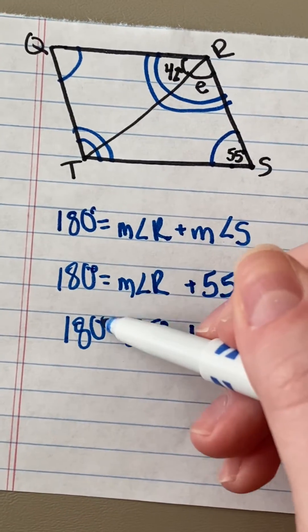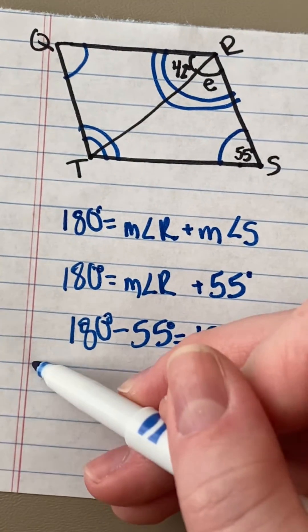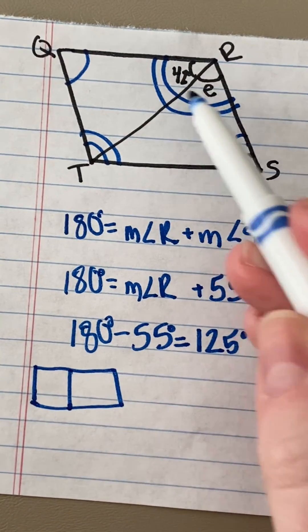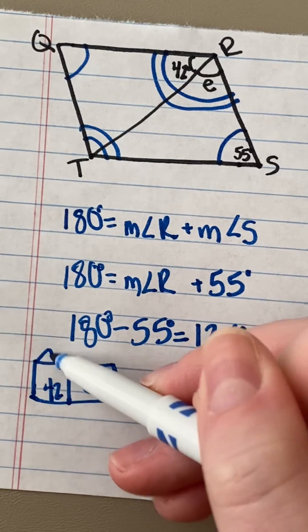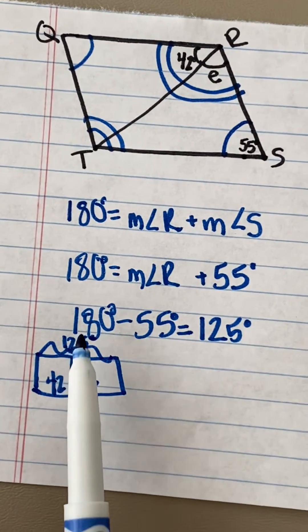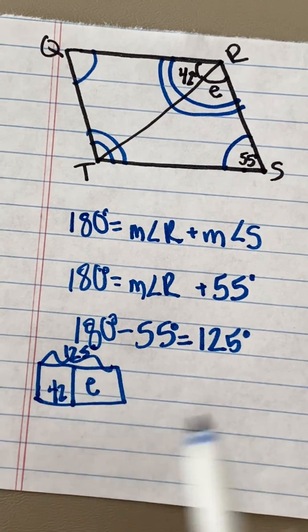So now I can figure out what this missing piece is of angle R. Remember that the sum of 42 and E is going to equal 125 degrees. Since I know my whole and one part, I need to subtract those two in order to find the missing part.